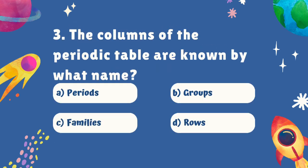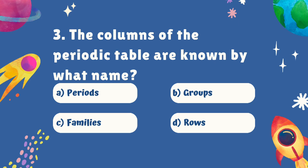Question number three. The columns of the periodic table are known by what name? Is it A. Periods, B. Groups, C. Families, or D. Rhoads? The correct answer is B. Groups.